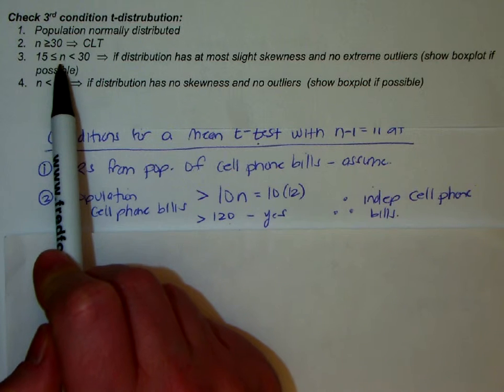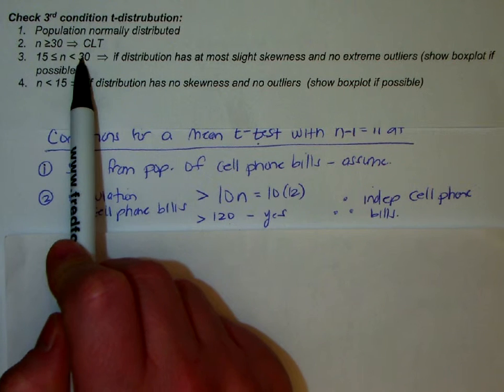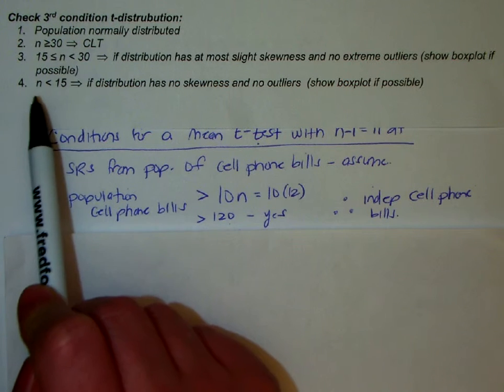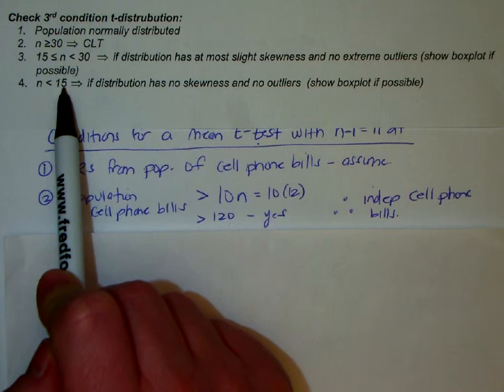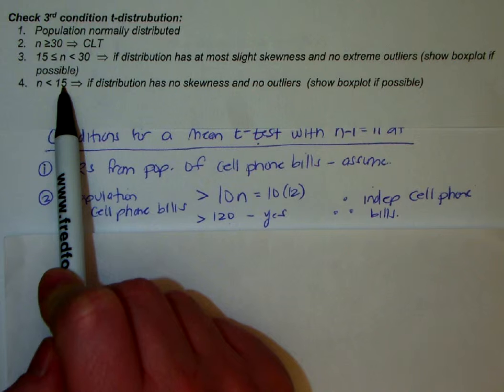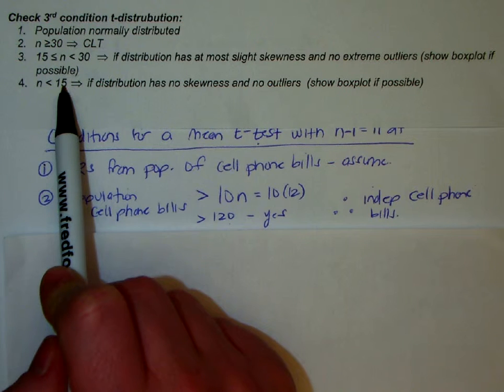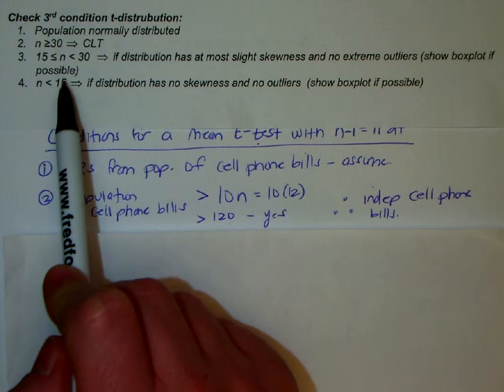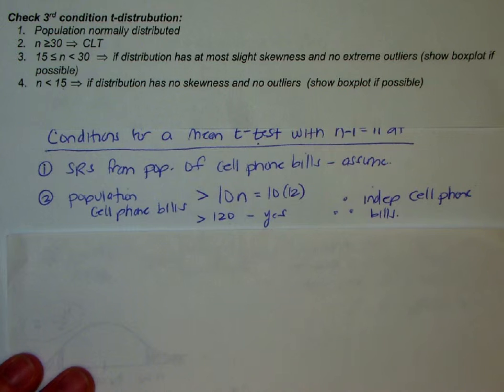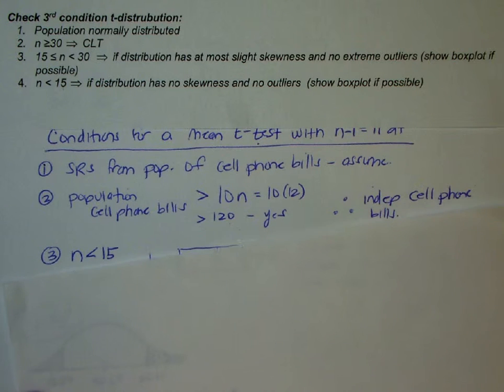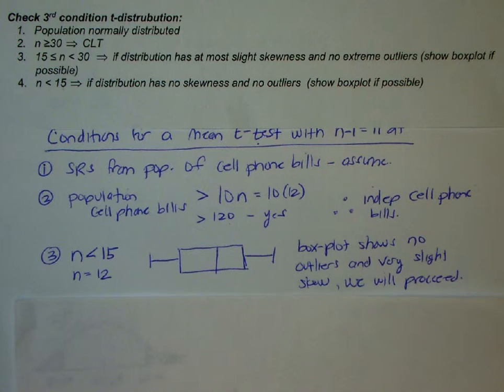Which it's not. Is N between 15 and 30? No. So now I'm here where we know that N is less than 15. So we're allowed to proceed if a box plot or the distribution shows that it doesn't have any skewness and no outliers, because T distributions are robust. So I'm going to write, and I've already got this written down because I've already done this problem. N is less than 15. I'm going to say N is 12.